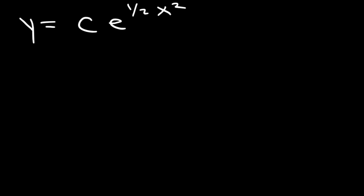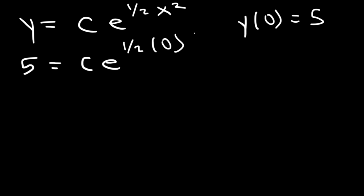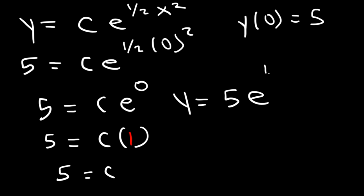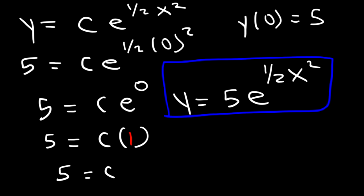The last thing we need to do is find a particular solution. We said that y of 0 is equal to 5, so let's find the value of the constant c. y is 5 and x is 0. 0 squared is 0 times a half, that's 0. So what we have is e raised to the 0 power. Anything raised to the 0 power is equal to 1. Therefore, c is equal to 5. So the particular solution is y = 5e raised to the ½x². That's the answer to this problem, and here is the general solution.